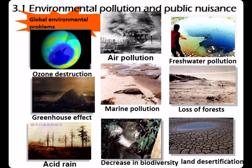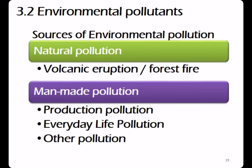Other cases of environmental pollution include ozone destruction, greenhouse effects, acid rain, air pollution, and fresh water pollution. Sources of environmental pollution can come from natural sources or man-made sources. Natural sources include volcanic eruption and forest fire. Man-made pollution includes production pollution such as industrial production, fertilizers, and pesticides, or it can come from everyday life such as sewer and garbage.